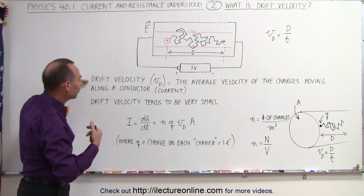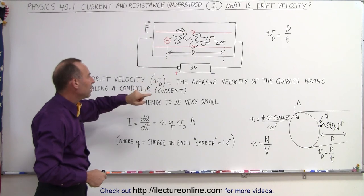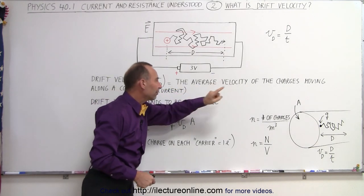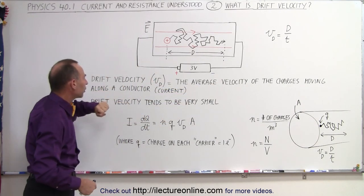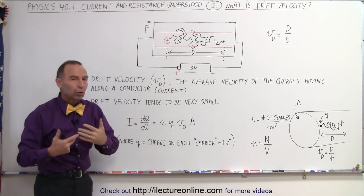So, the drift velocity is defined as v sub d, which is the average velocity of the charges moving along a conductor, and so we call that the current.